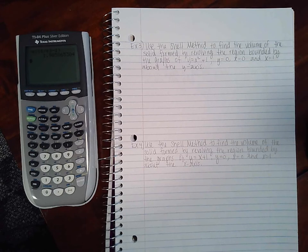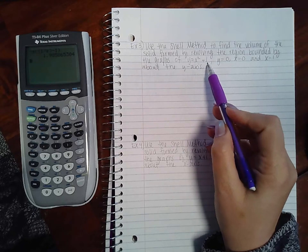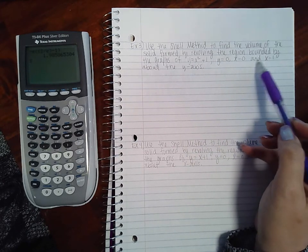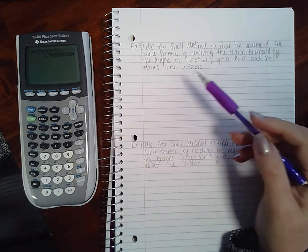Example 3 of section 7.3 says use the shell method to find the volume of the solid formed by revolving the region bounded by the graphs y equals x squared plus 1, y equals 0, x equals 0, and x equals 1 about the x-axis.